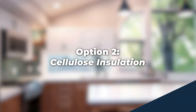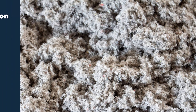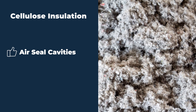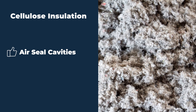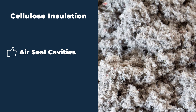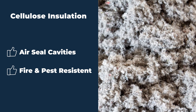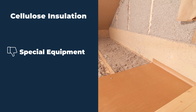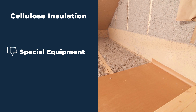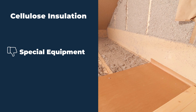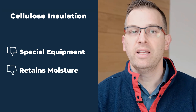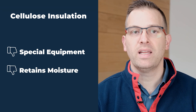Another common and widely used wall insulation is cellulose. Cellulose is an eco-friendly product made up of primarily recycled papers. It does a much better job of air sealing a cavity when you pack it into the space, and it is fire and pest resistant. Some of the downsides in a wall cavity application for cellulose are the special equipment you need to apply it, and it is also extremely susceptible to moisture — if it gets wet, typically it has to come out.